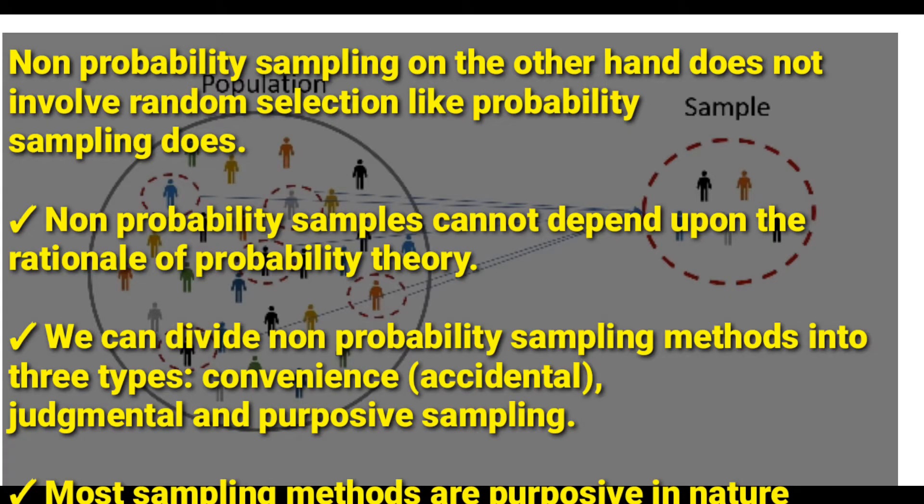For probability sampling techniques, the population is always known. But for non-probability sampling techniques, the population is not always known and selection is not by chance.